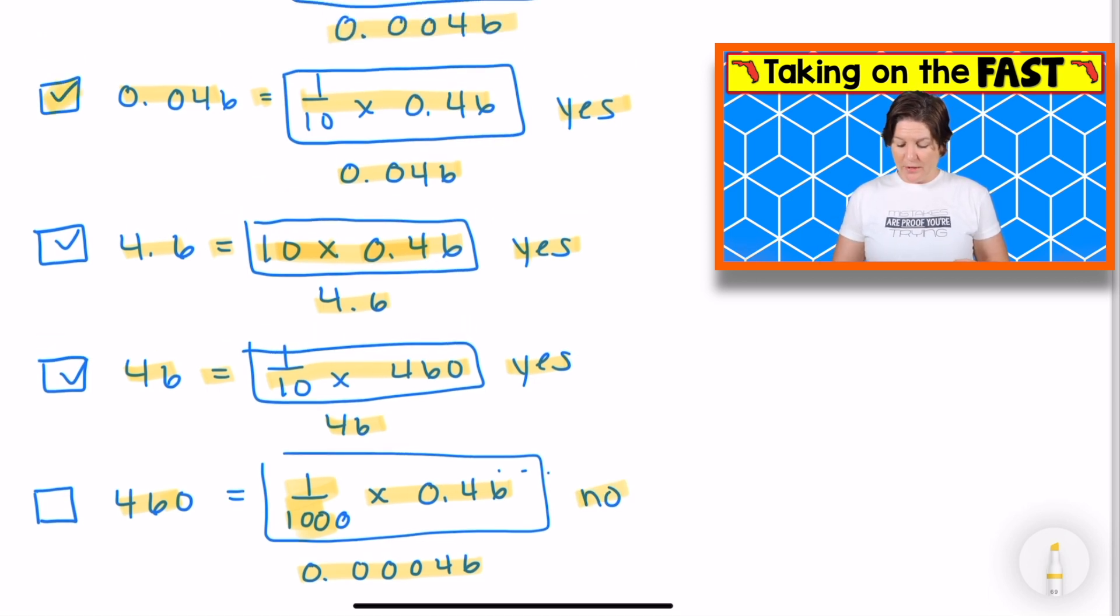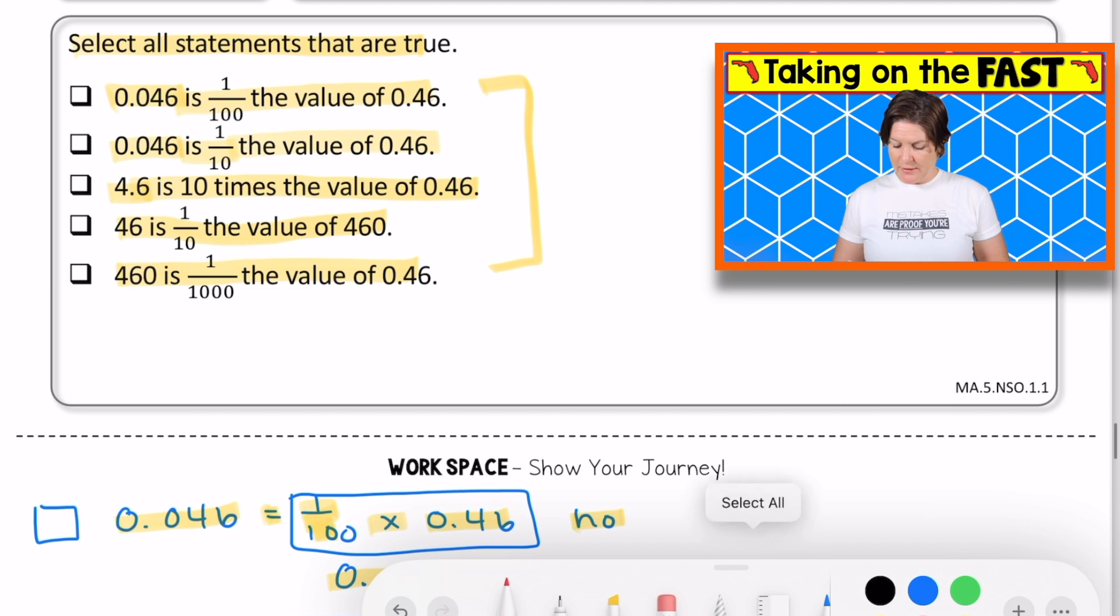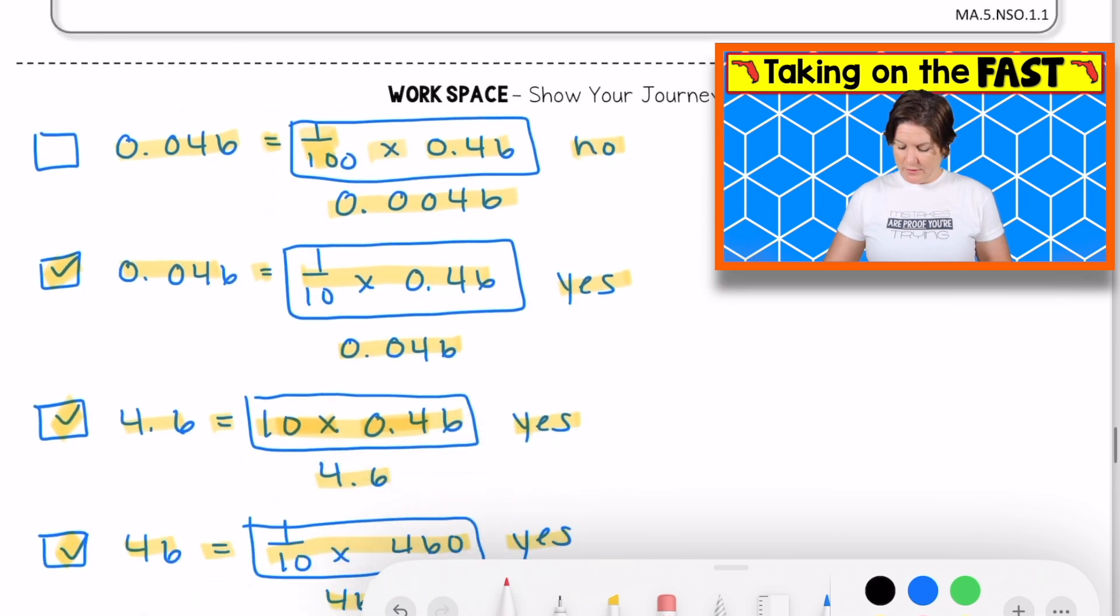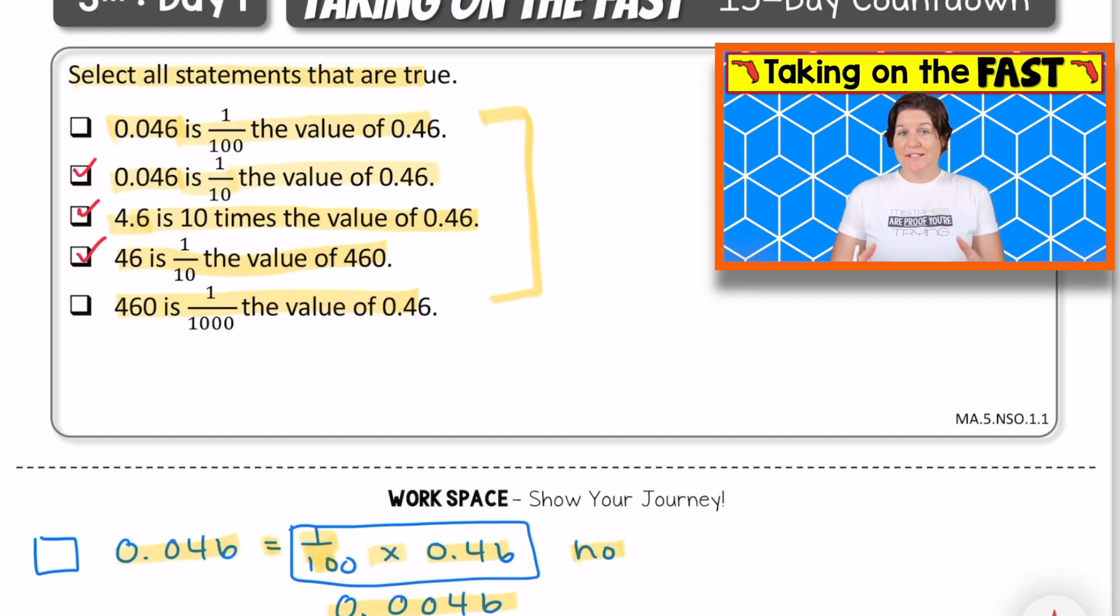So we're looking for the second one, the third one, and the fourth one. Make sure I transfer everything up to my answers and lock them in. The second one, the third and the fourth. The third and the fourth. Pause the video to jot down your notes and when you're ready, press play to continue.